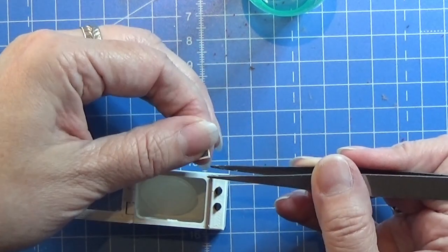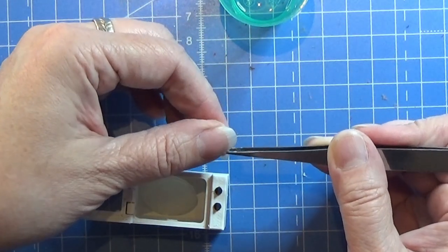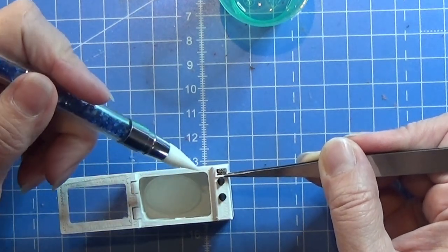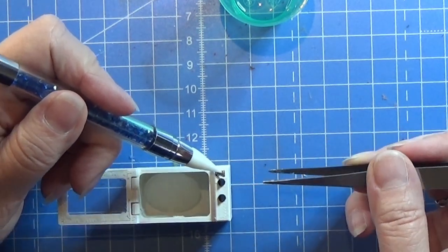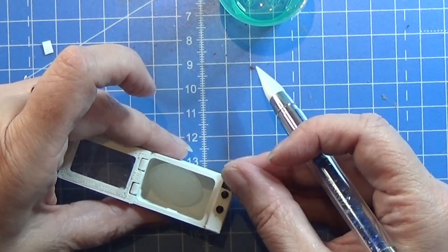If you don't have this water decal paper you can use normal print paper, cut the little picture out and then just glue it onto the little microwave. You can find the link for the print sheet in the info box below.